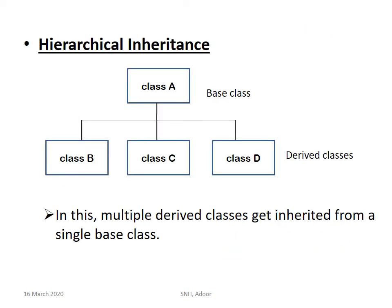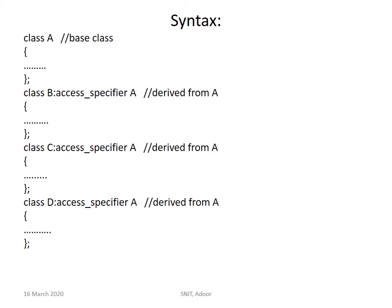Next is hierarchical inheritance. Here there is only one base class and many derived classes — from one parent all the classes are being derived. Class A is there; from class A, class B is derived, and C and D are also derived. Multiple derived classes get inherited from a single base class; the base class is single and derived classes are many. The syntax: class A is the base class. Class B colon access-specifier A, class C colon access-specifier A, class D colon access-specifier A — that is the syntax of hierarchical inheritance.